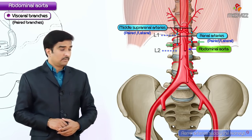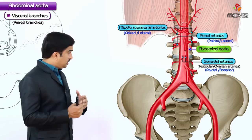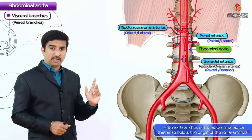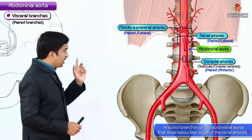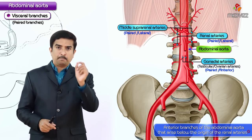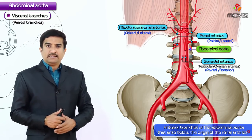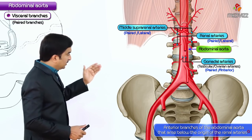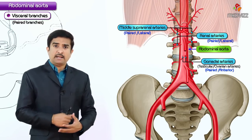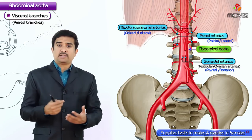The testicular or ovarian arteries are paired arteries, but they are paired anterior branches — not lateral branches — of the abdominal aorta. They arise below the origin of the renal arteries, pass downwards and laterally, and supply the testicles in males and ovaries in females.